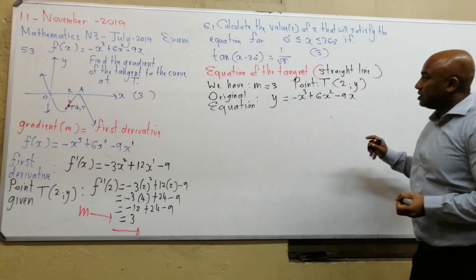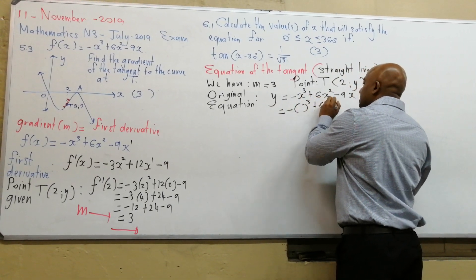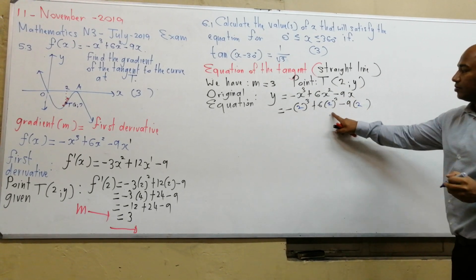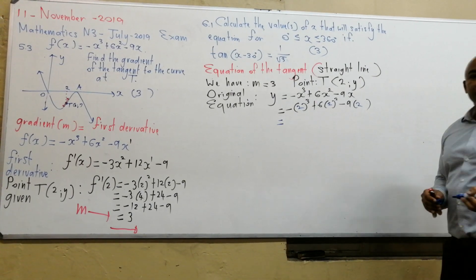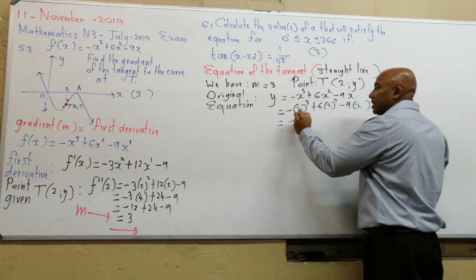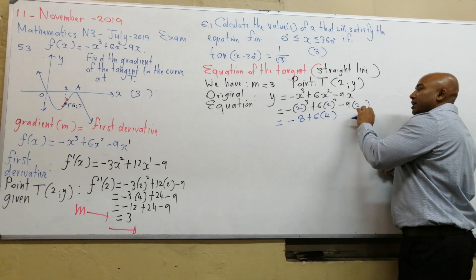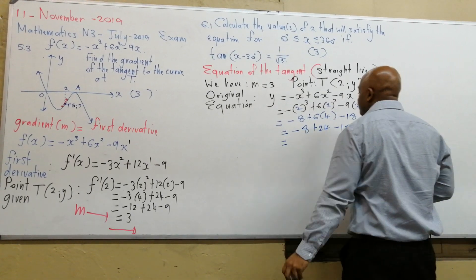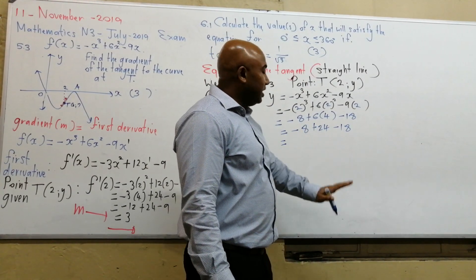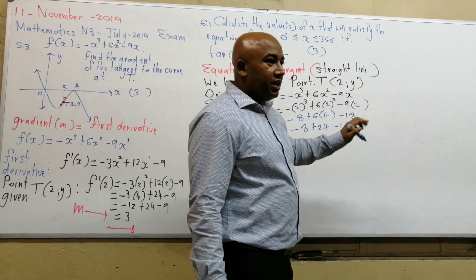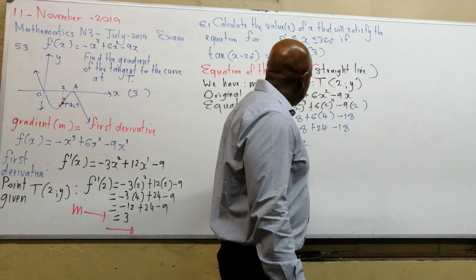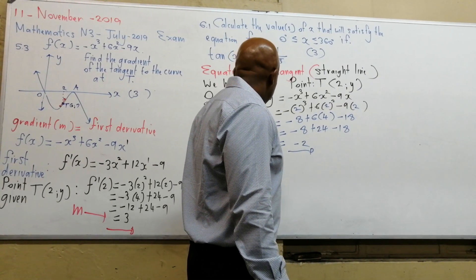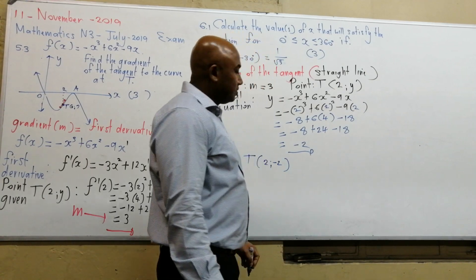Substituting x equals 2: minus 2 cubed is minus 8; plus 6 times 2 squared is plus 6 times 4 which is 24; minus 9 times 2 is minus 18. So we get minus 8 plus 24 minus 18: 24 minus 8 is 16, and 16 minus 18 is minus 2. Therefore point T has coordinates (2, minus 2).